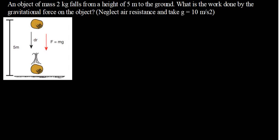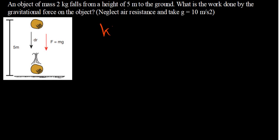They want us to find the work done. Now, in this case, the work done by the gravitational force is the same as the potential energy, because we know that work is equal to force times distance. In this case, we have got an object — this object is falling. So the gravitational force in this case is the weight of this object. So we're going to say the force is going to be mg.